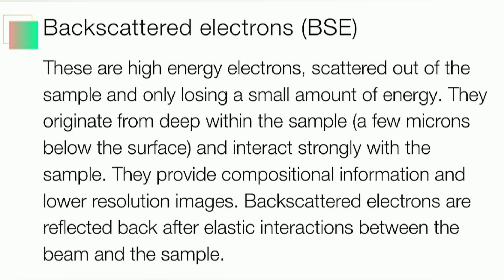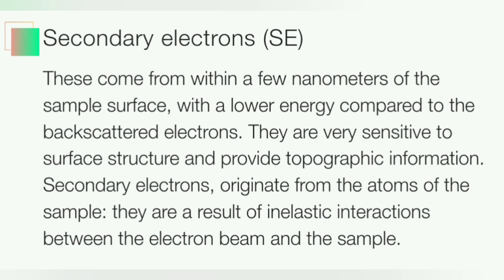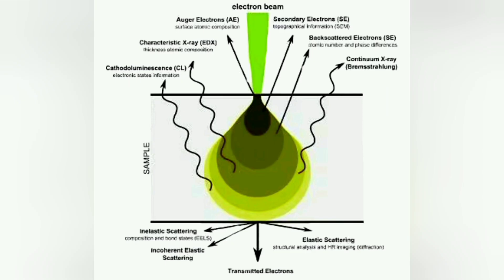On contrary, secondary electrons come from within a few nanometers of the sample surface with a lower energy compared to the backscattered electrons. They are very sensitive to the surface structure and provide topographic information. Secondary electrons originate from the atoms of the sample. They are a result of inelastic interactions between the electron beam and the sample. These two terms are extremely important for you to remember and understand.